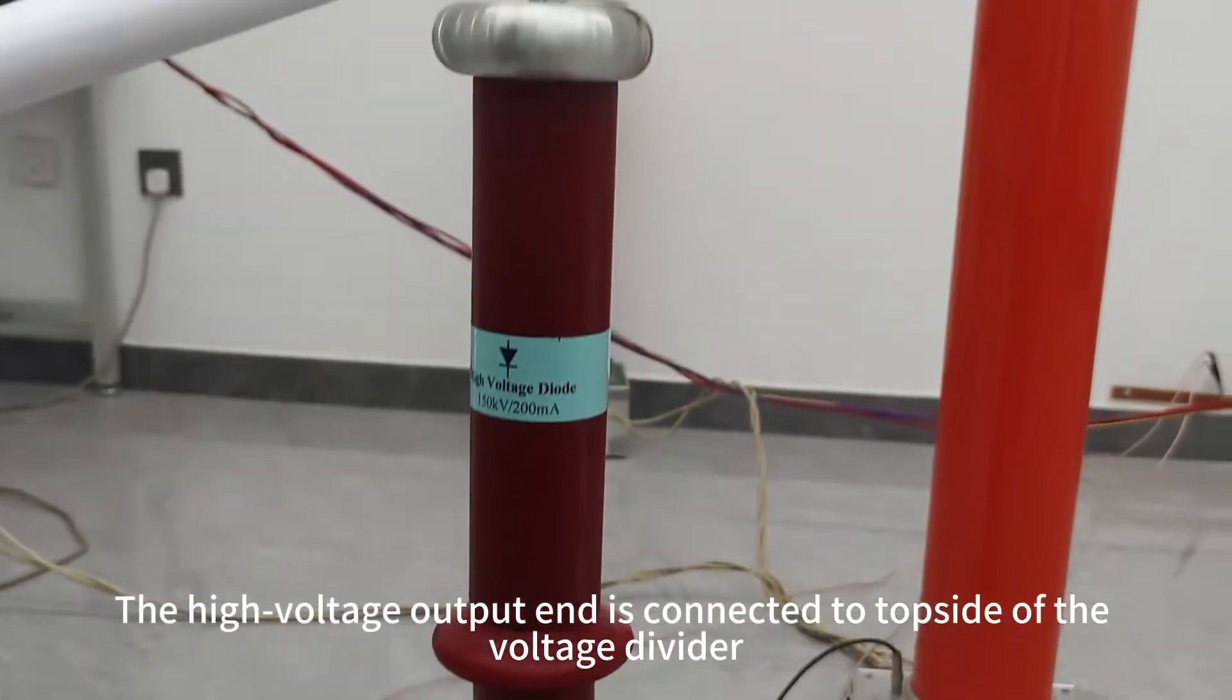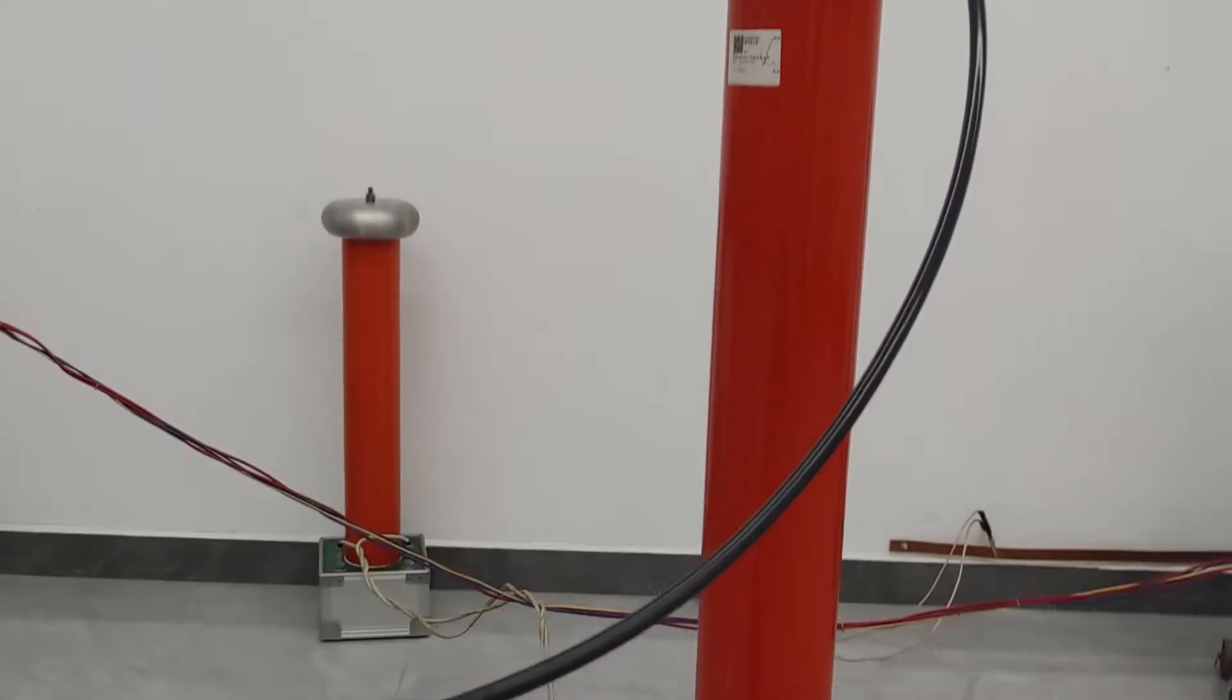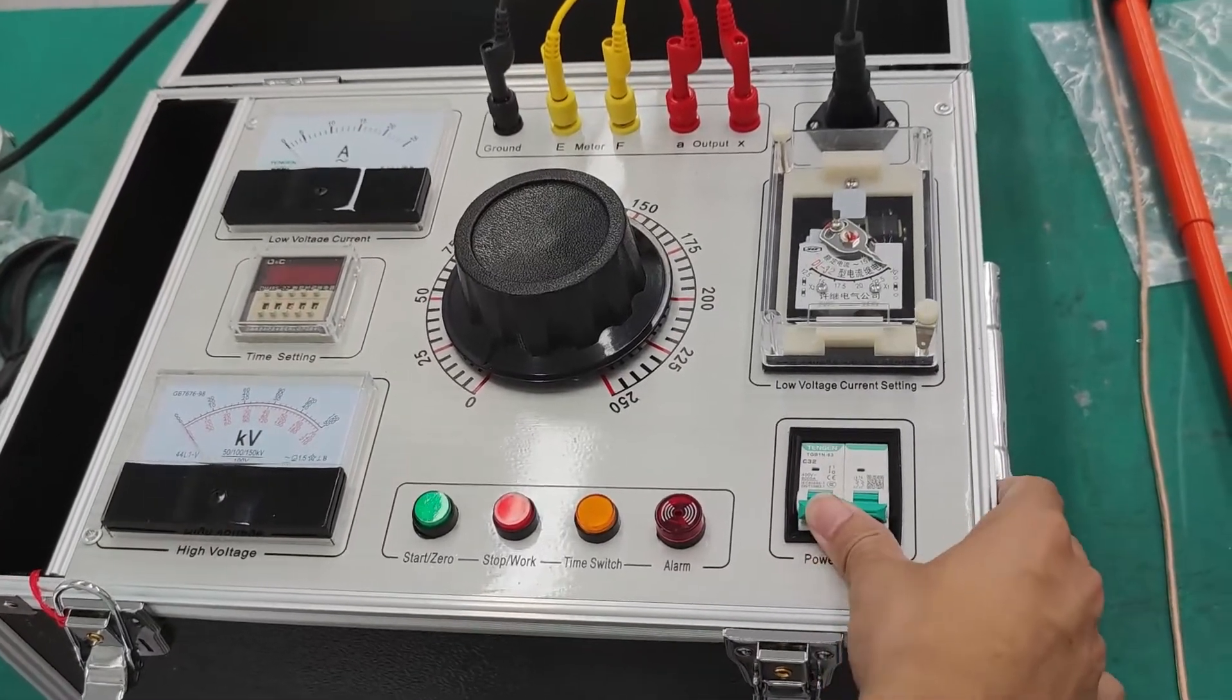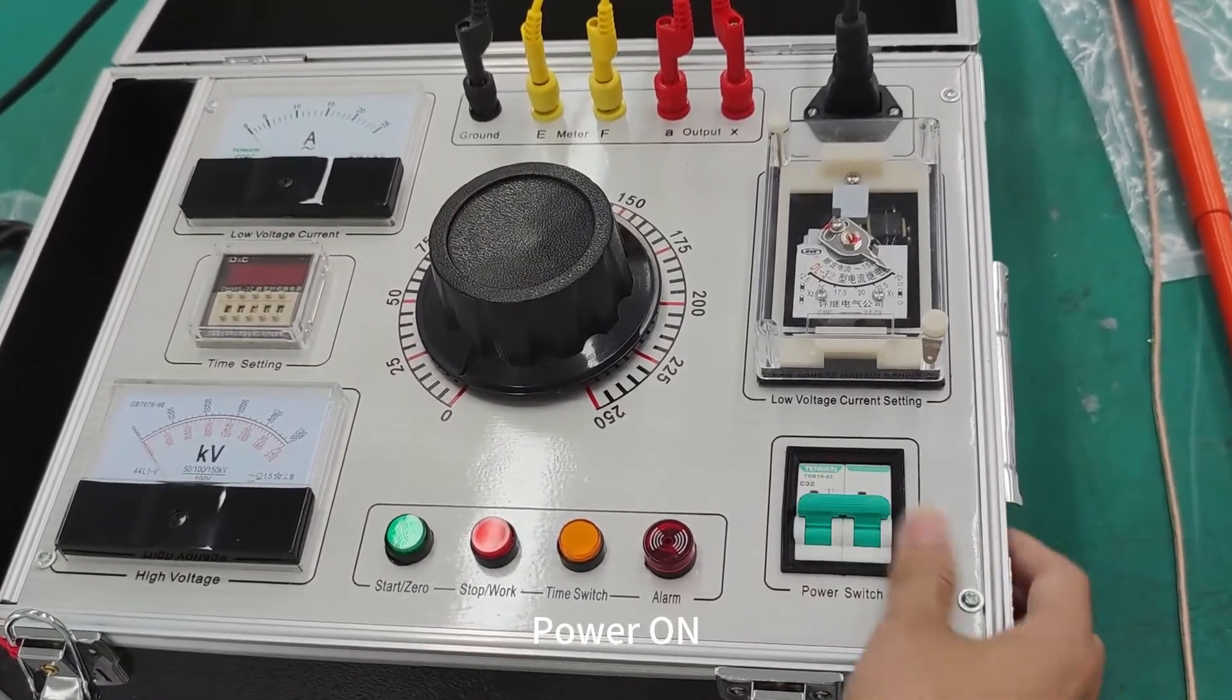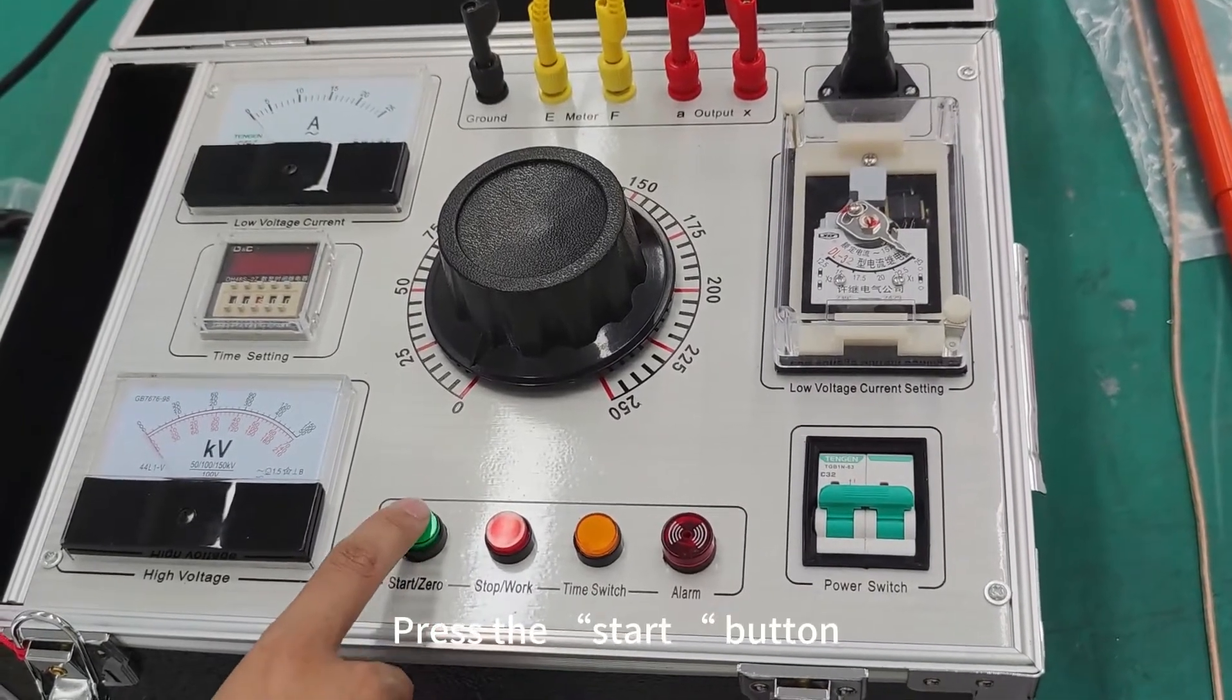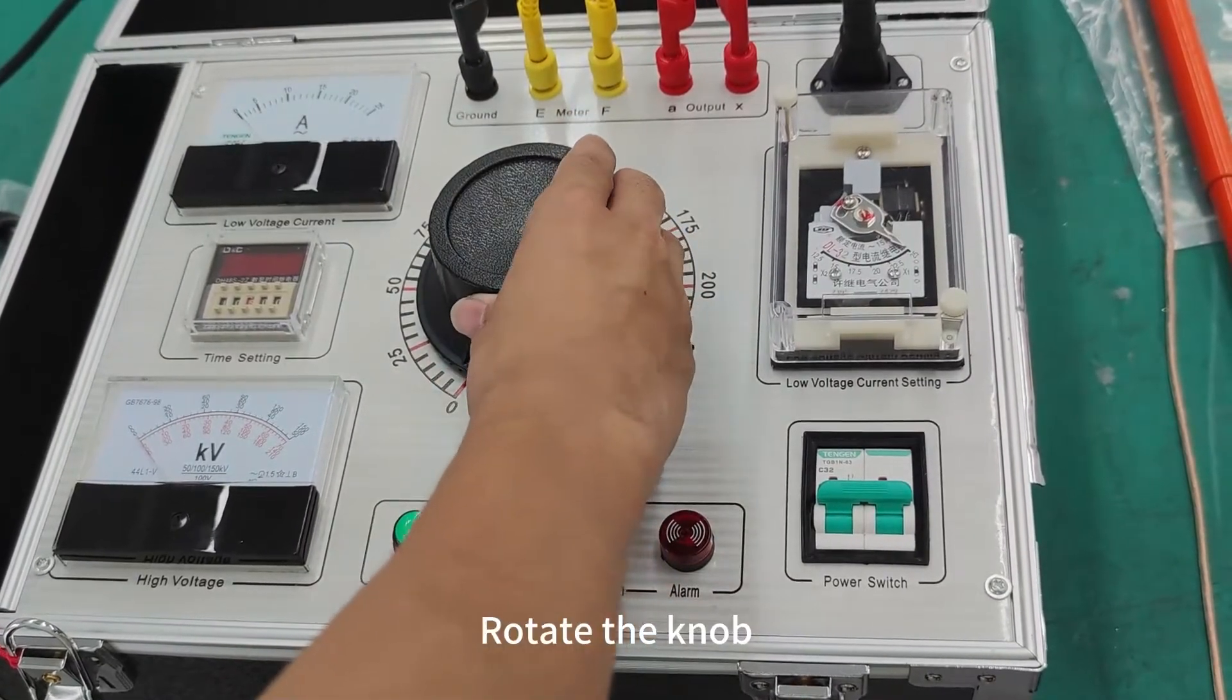The high voltage output end is connected to the top side of the voltage divider. Now power on for testing. Press the start button. Rotate the knob.